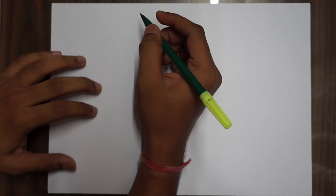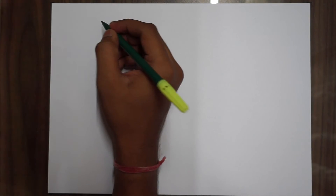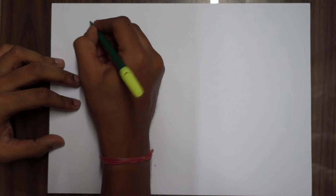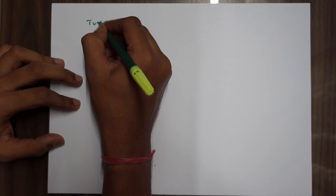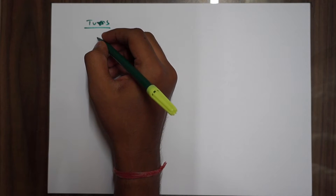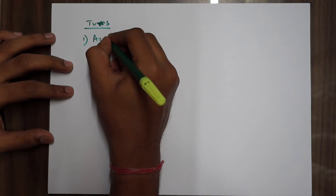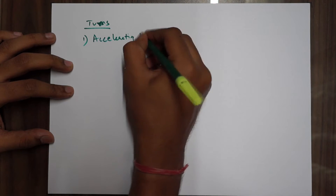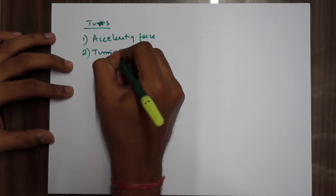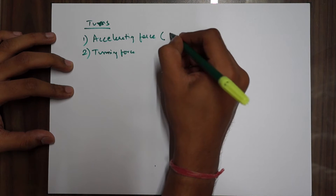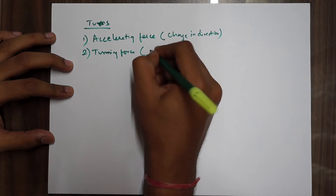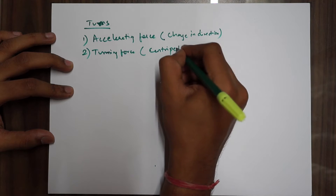Continuing from our flight mechanics previous video — I just wanted to make the video shorter so I broke it in between. So we'll continue. Turns: there are two kinds of forces acting — accelerating force, which is any change in direction, and turning force, which is basically your centripetal force.